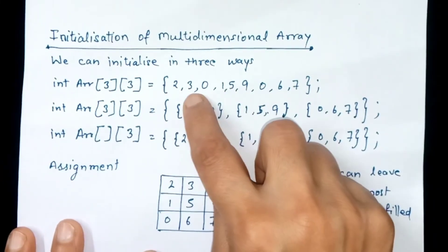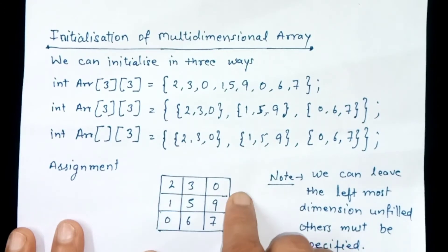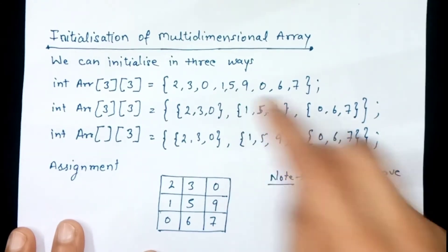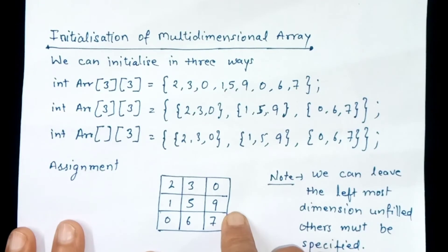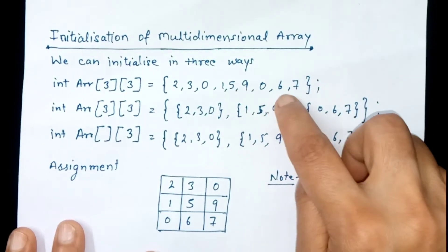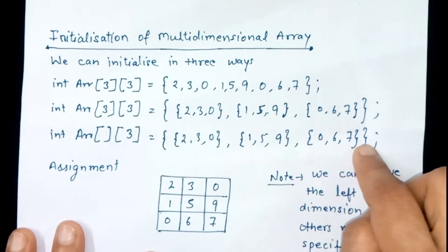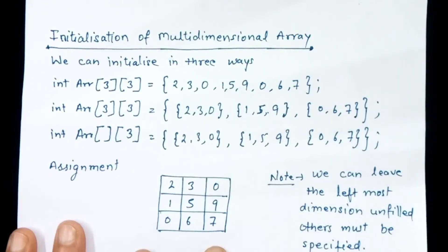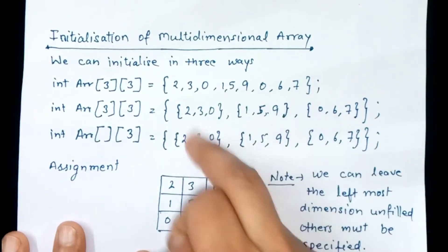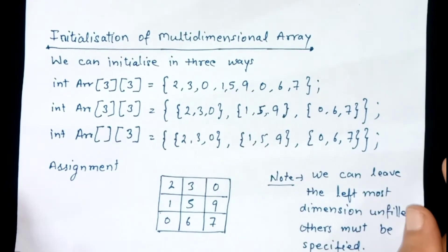The resulting matrix has three rows: the first row contains 2, 3, 0; the second row contains 1, 5, 9; and the third row contains 0, 6, 7. The assignment of all three initialization methods will be the same, so we can use any one method of initialization.